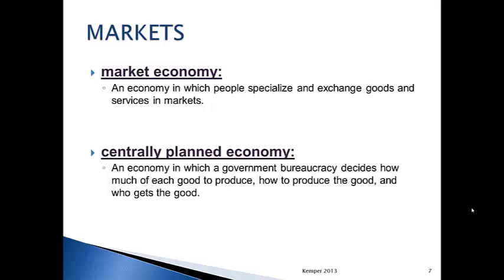The United States has some centrally planned economy similarities. For instance, the education system: we decide as a federal government how much money to give to each state, and then they decide how to divvy it out and what the requirements are for that state to get the money. In Texas, you have to meet standardized testing requirements in order to continually receive that money. Most of you are probably very familiar with standardized testing processes.